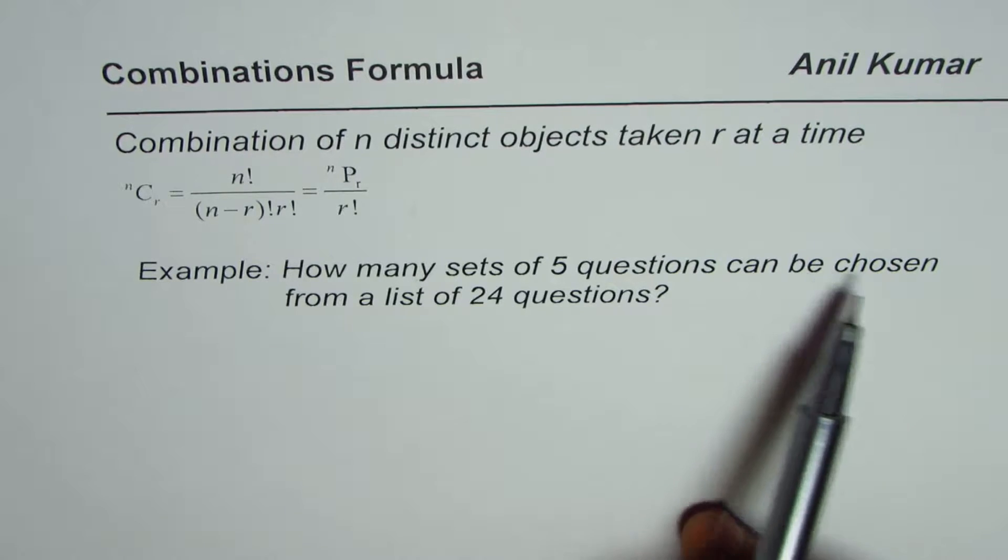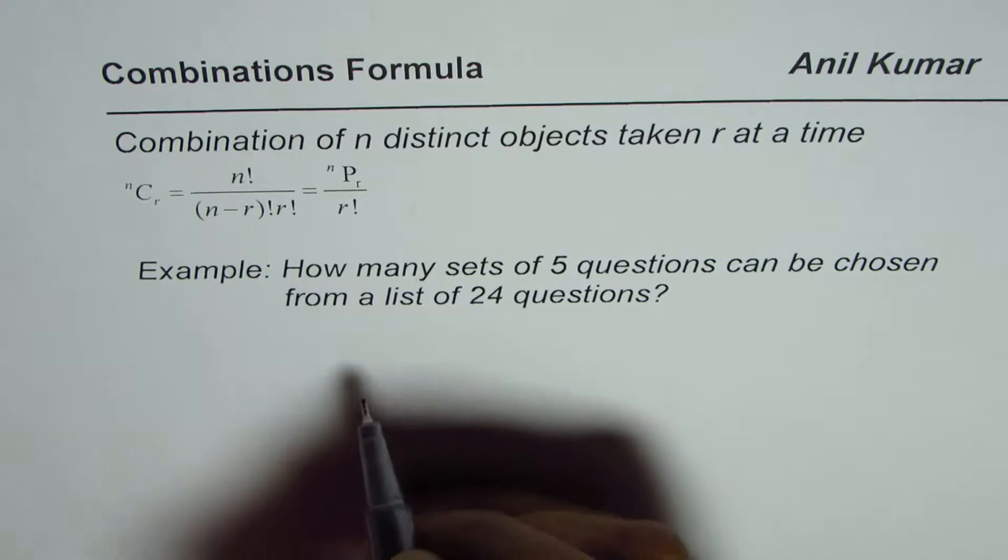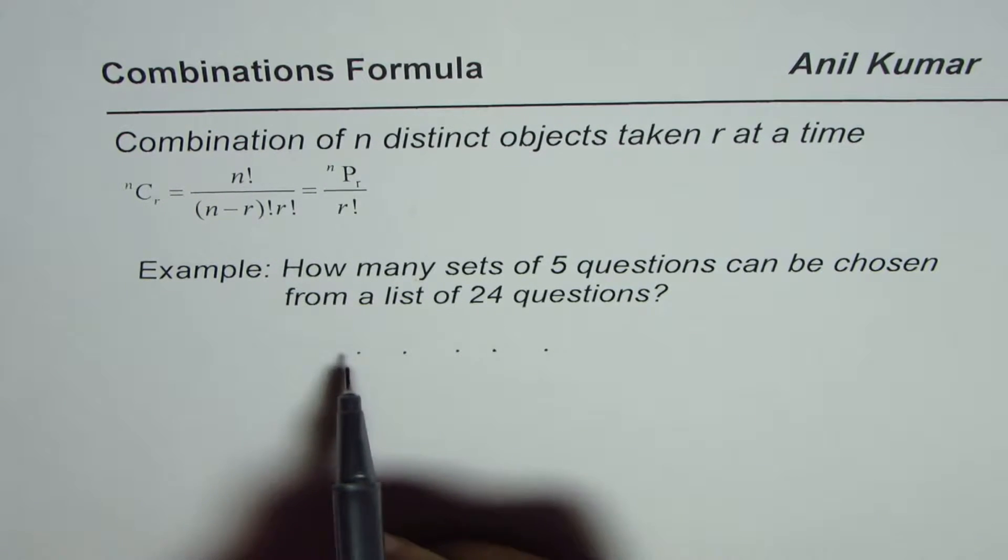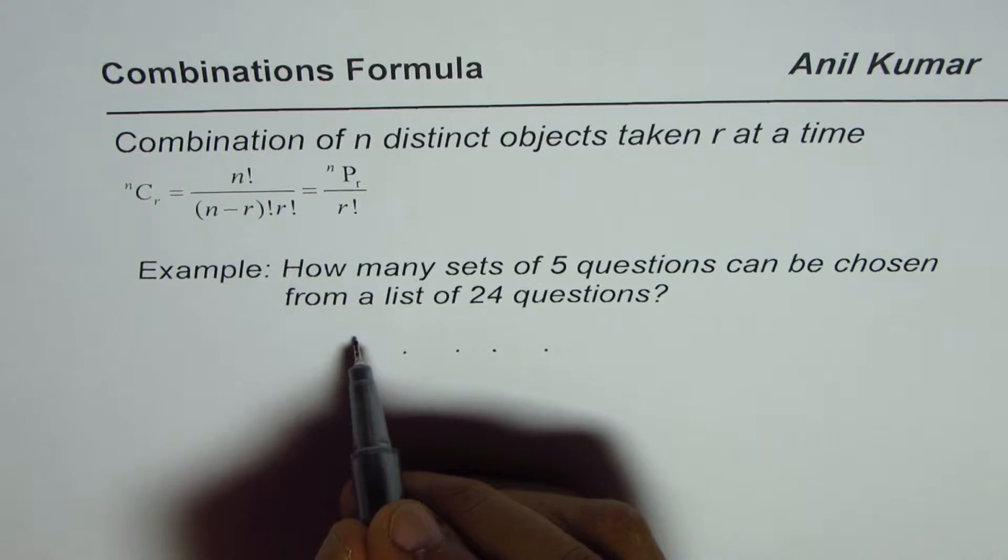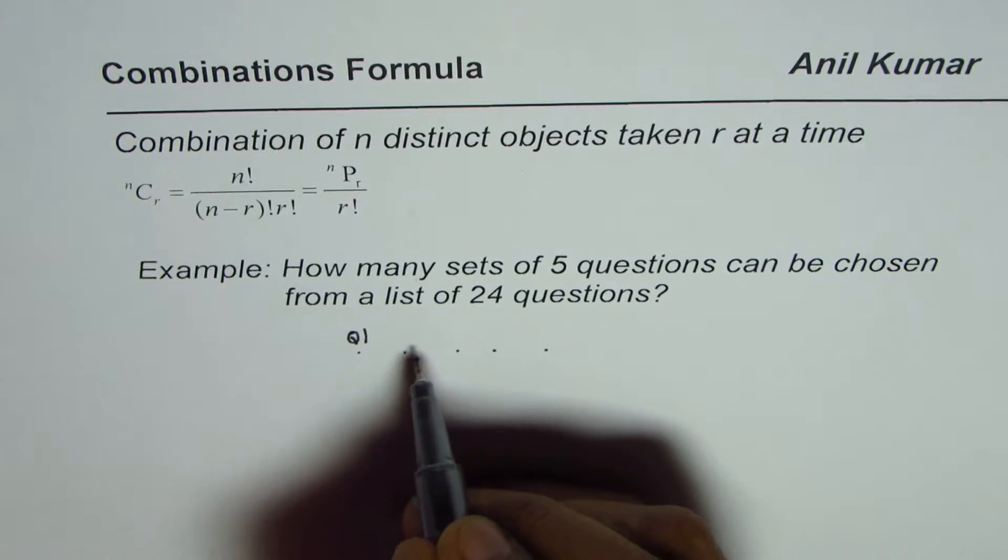The example is: How many sets of five questions can be chosen from a list of 24 questions? So if you select these five questions, the order is not important. You can have question number one here or at any other place.